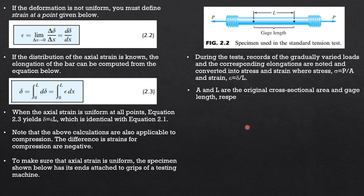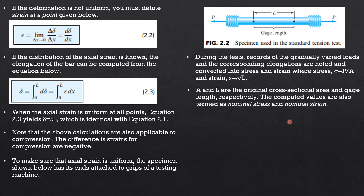A and L are the original cross-sectional area and gauge length respectively. The computed values are termed nominal stress and nominal strain because the results are based on the original length and original cross-sectional area of the specimen, not the actual dimensions after the specimen undergoes deformation.